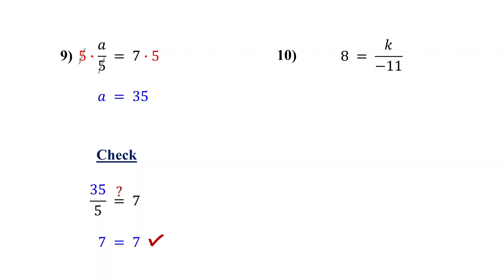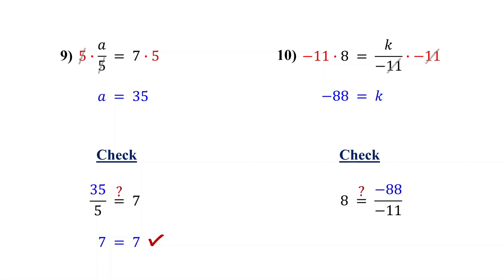Give this one a try. If you have any questions, please feel free to leave them in the comments below. Here, k is being divided by negative 11. So to get k by itself, multiply both sides by negative 11. On the right, the negative 11s cancel out, leaving just k. On the left, negative 11 times 8 is negative 88. So the solution is k equals negative 88. Make sure it checks out: negative 88 divided by negative 11 is 8. It works.